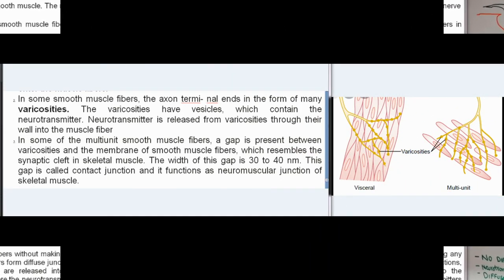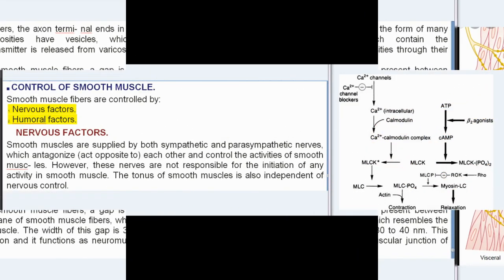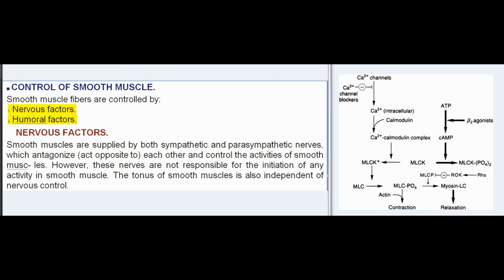In some smooth muscle fibers, the axon terminal ends in the form of many varicosities. The varicosities have vesicles which contain the neurotransmitter. Neurotransmitter is released from varicosities through their wall into the muscle fiber. In some of the multi-unit smooth muscle fibers, a gap is present between varicosities and the membrane of smooth muscle fibers, which resembles the synaptic cleft in skeletal muscle. The width of this gap is 30 to 40 nanometers. This gap is called a contact junction and it functions as the neuromuscular junction of skeletal muscle.